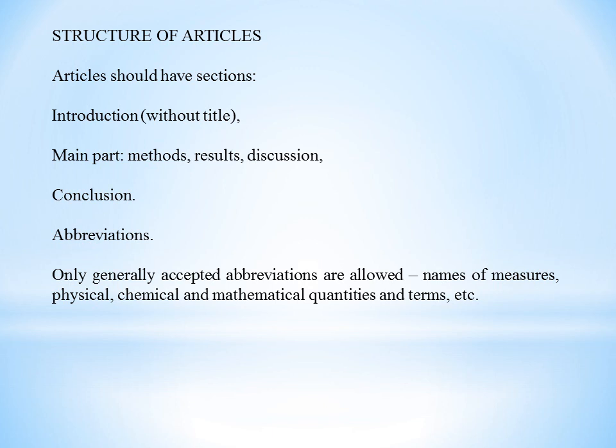Table titles are in bold, lowercase font; the text inside tables uses font size 10. Regarding abbreviations, only generally accepted abbreviations are allowed for names of measures, physical, chemical, and mathematical quantities. All abbreviations should be defined, with the exception of a small number of commonly used ones. The names of institutions at first mention are given in full, followed immediately by the generally accepted abbreviation in parentheses.